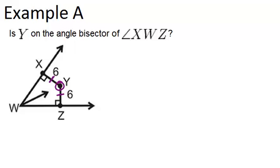I also know that there are two right angles here, and what that means is that Y is actually equidistant from the two sides of the angle. Because the distance from Y to each side of the angle is the same.